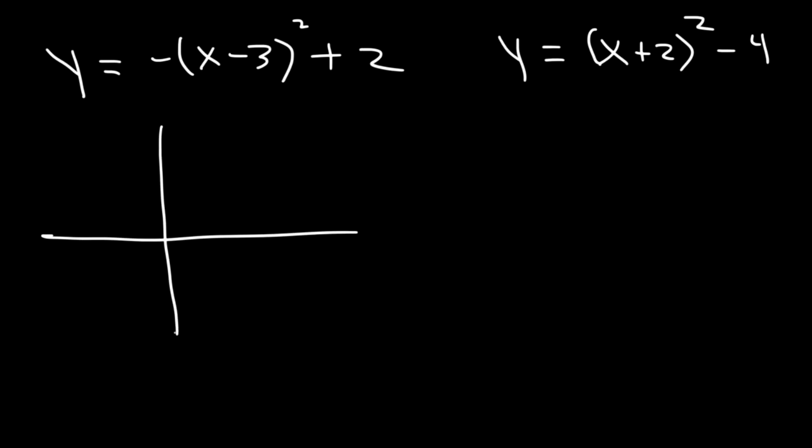So the first one, it's going to shift three units to the right and up two units. That's the location of the vertex. The vertex is 3 comma 2. And because of the negative sign, it's going to open downward.